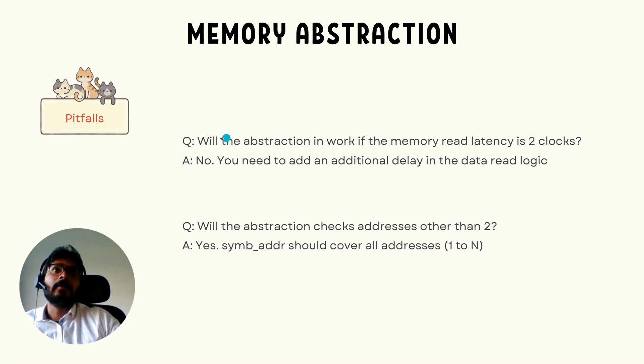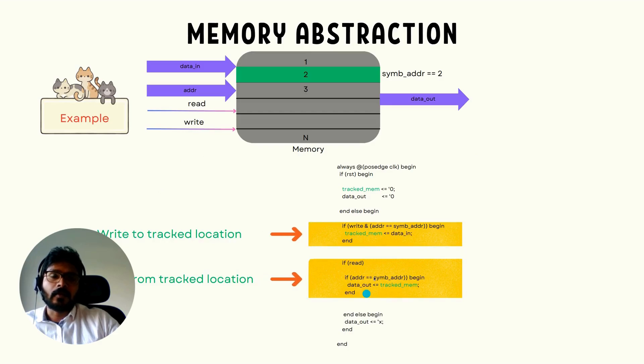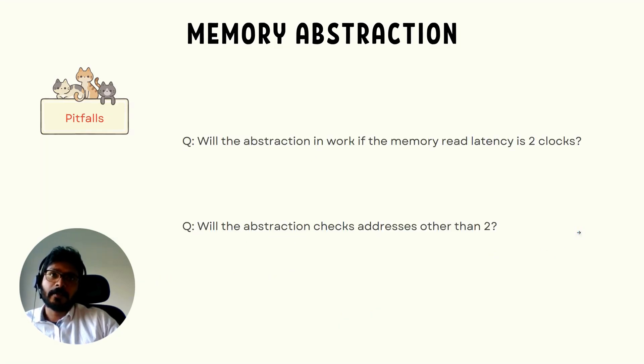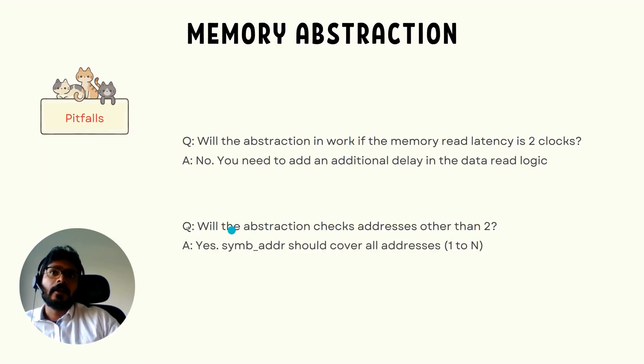Will the abstraction work if the memory read latency is two clocks? The current code which is shown in the previous slide will not work because there is just one latency. So if you send a read, and in the next clock cycle you're going to get the data, but if there is a memory in RTL which is just saying that you need to get the data only after two clock cycles, you need to modify this to ensure that the timing is obeyed.